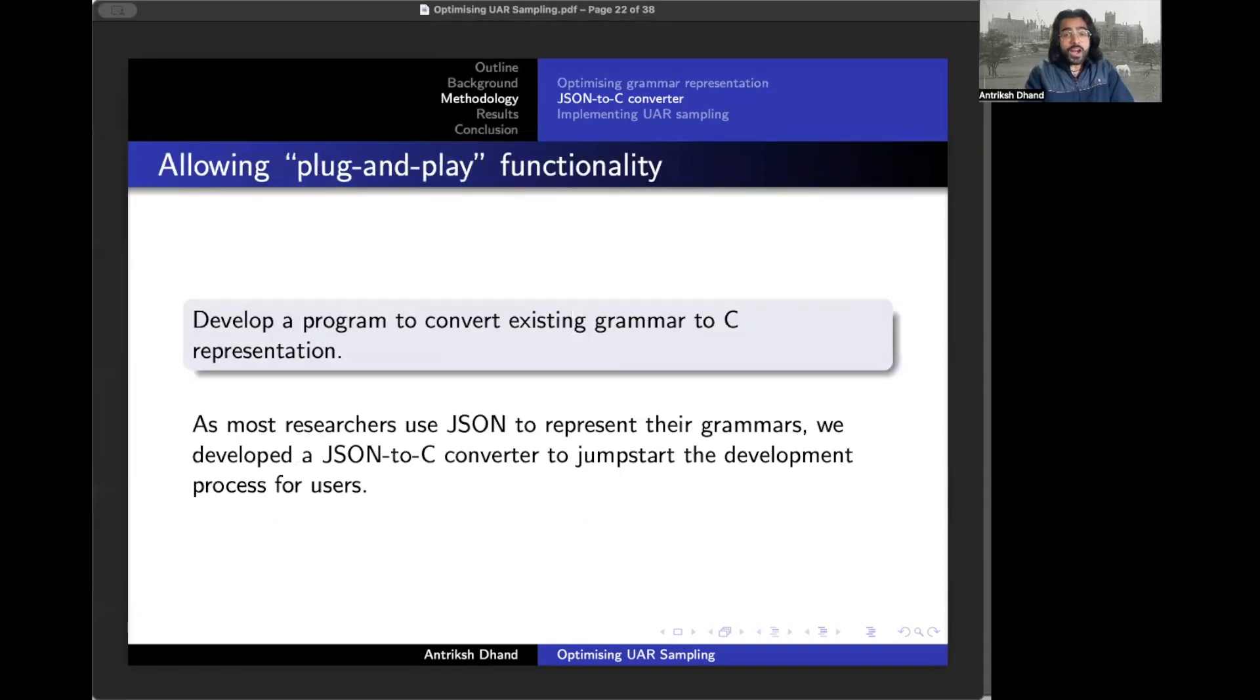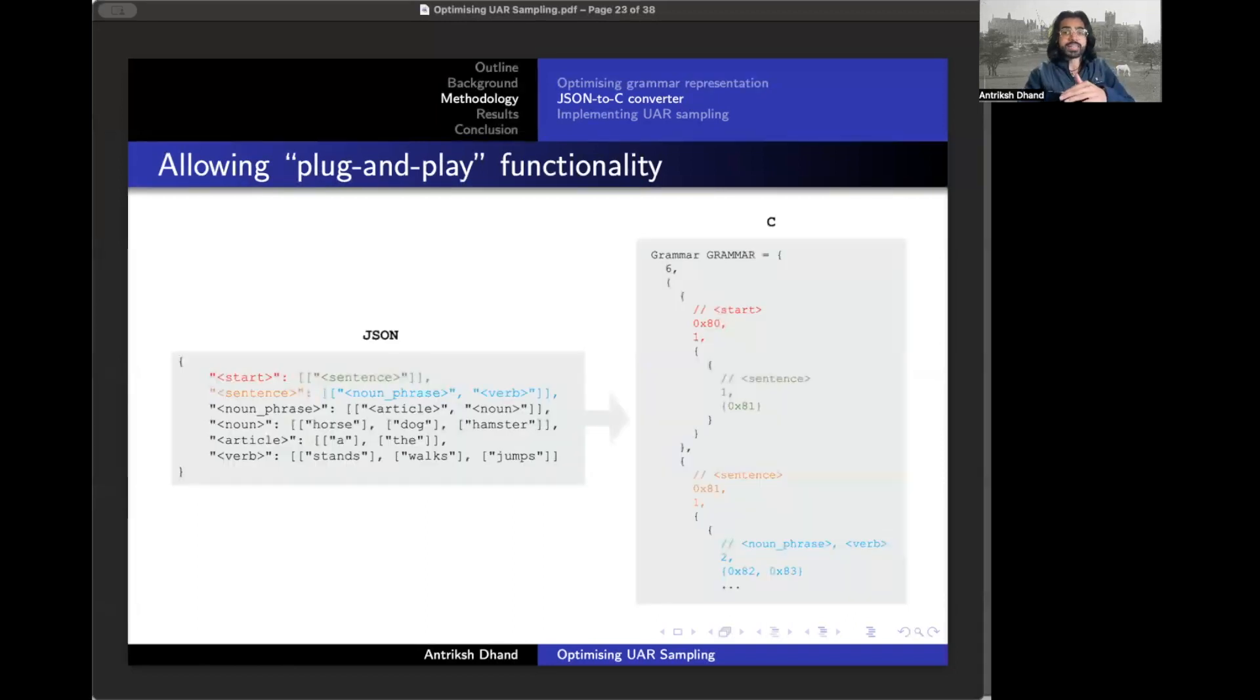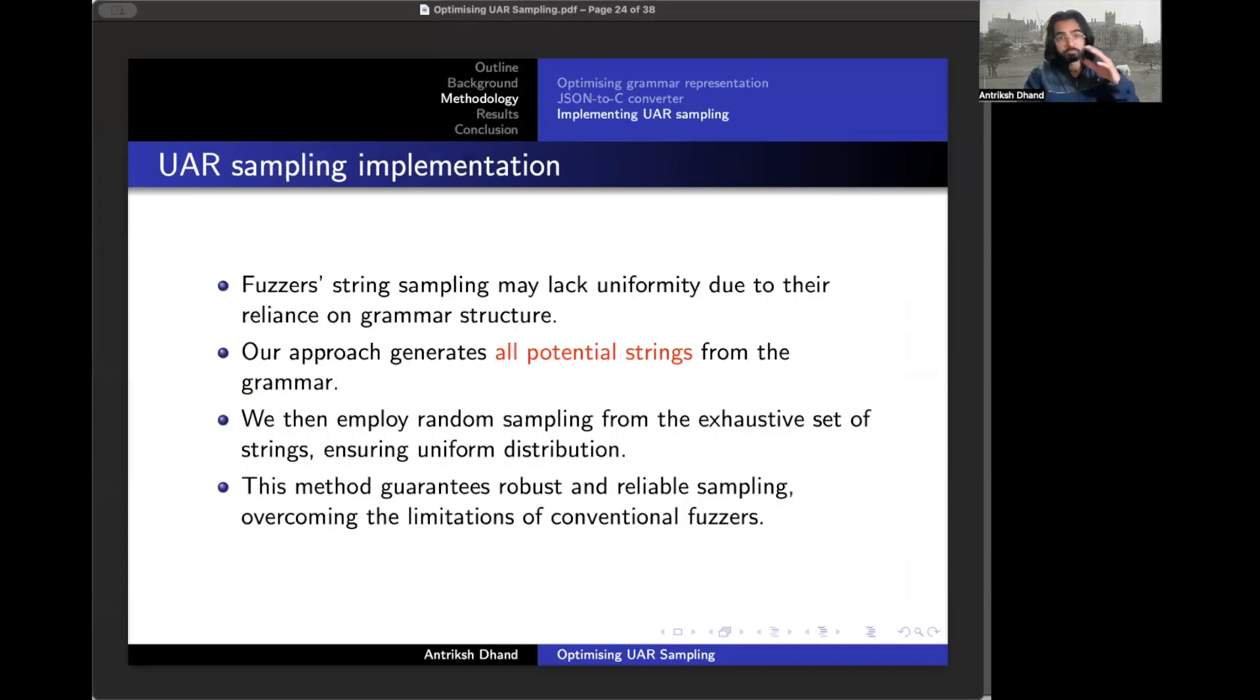So we've defined a structure to represent a grammar. Now we want to make the structure available to developers. Most researchers use JSON to represent grammars. So here we've created a JSON to C converter. The developers can punch in the JSON code and it'll output the C initialization code that developers can use to statically initialize their grammar into their programs.